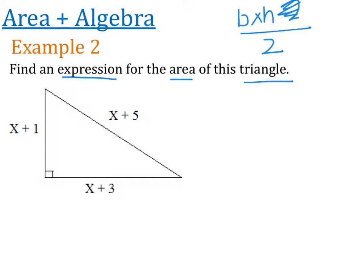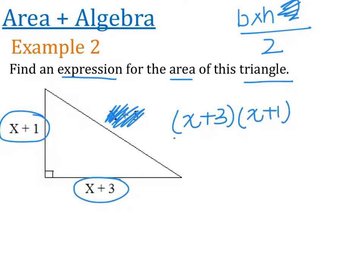Alright, so we need the base, which is x plus 3, and we need the height, which is x plus 1. We do not need x plus 5. It's just there to throw us off, to make us confused, to make us try to do the wrong thing. So we're looking for the area, so let's go ahead and try this. So we've got the base, which is x plus 3 times by the height, which is x plus 1, and then I want to go ahead and divide my entire answer by 2.